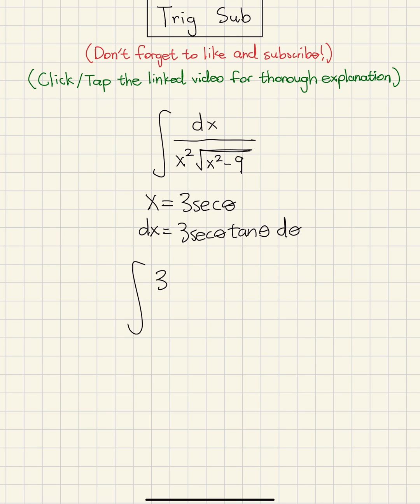Now we plug it in. We get 3 secant theta tan theta d theta over 3 secant theta squared root of 3 secant theta squared minus 9.